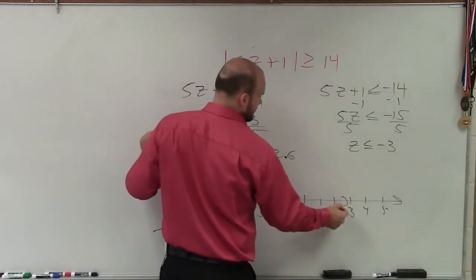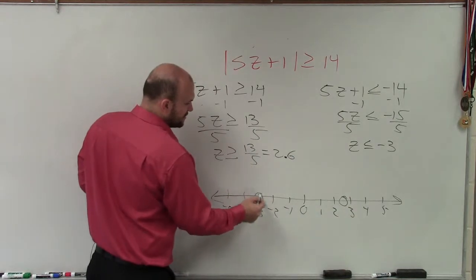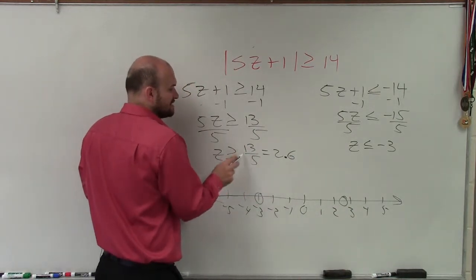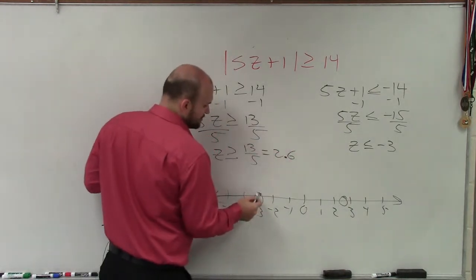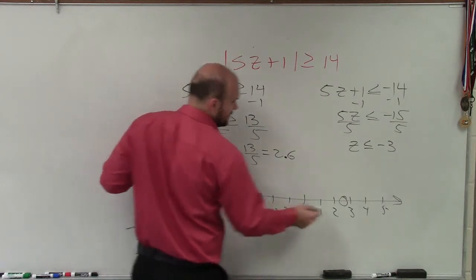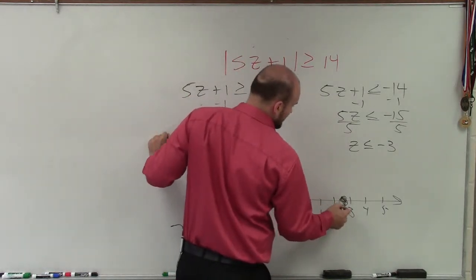So I go to 2.6, which is like right here, make a circle. I go to negative 3, which is right here. And then I notice this is greater than or equal to or less than or equal to. So I'm going to go ahead and fill in each one of these circles.